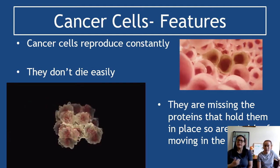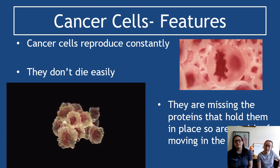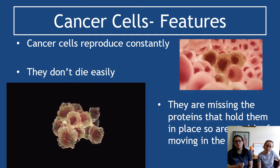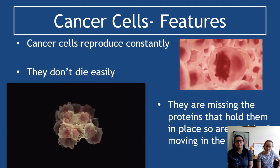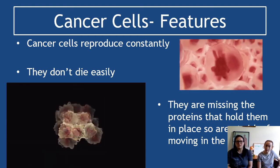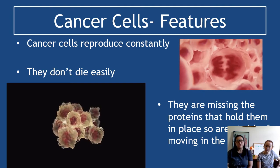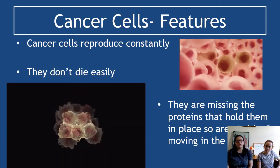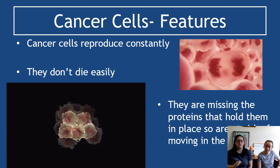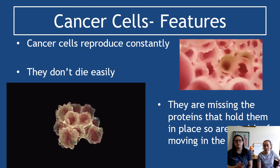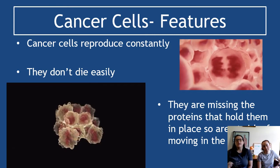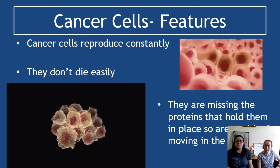In addition, cancer cells don't die easily. Quite a lot of cancer cells have mutated to the extent that they don't respond to normal signals from the immune system telling them to die. The immune system does send those signals to cells — essentially telling them to self-destruct — but cancer cells ignore those signals and just keep going.